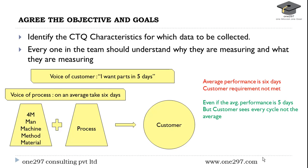The first point is agree the objective and goals. First you have to identify the CTQ characteristics for which the data is to be collected. CTQ is critical to quality — that is the customer requirement. Everyone in the team should understand why they are measuring and what they are measuring. For example, the voice of the customer is 'I want the part in five days,' so the CTQ is five days — that is delivery time. The voice of the process is that on average it takes six days, meaning the customer requirement is not met. Even if the average performance is five days, it would not be good enough because the customer sees every cycle, not the average.